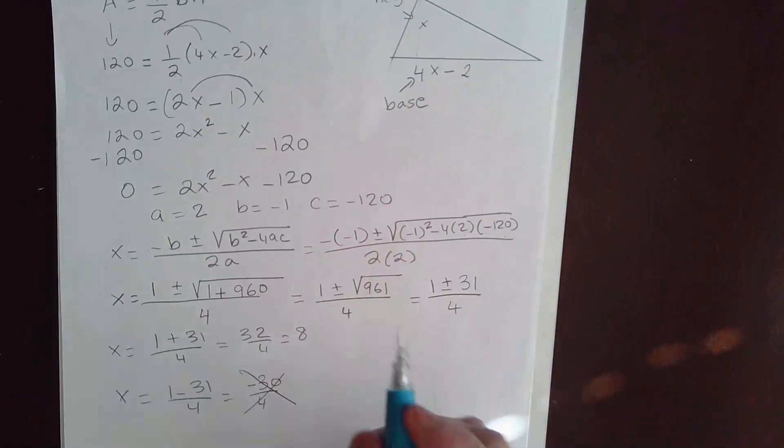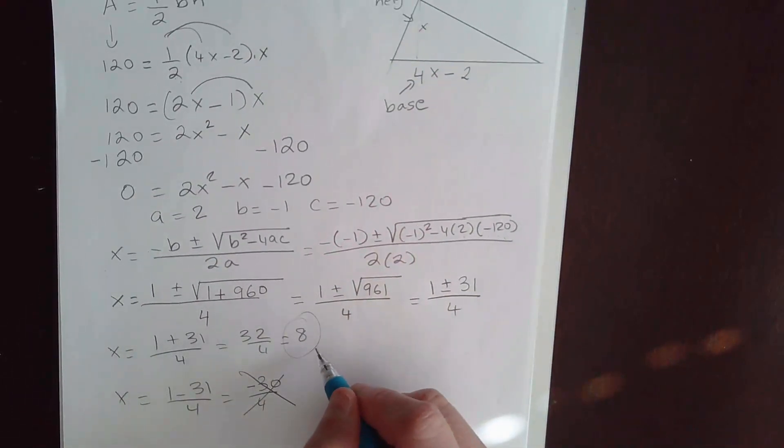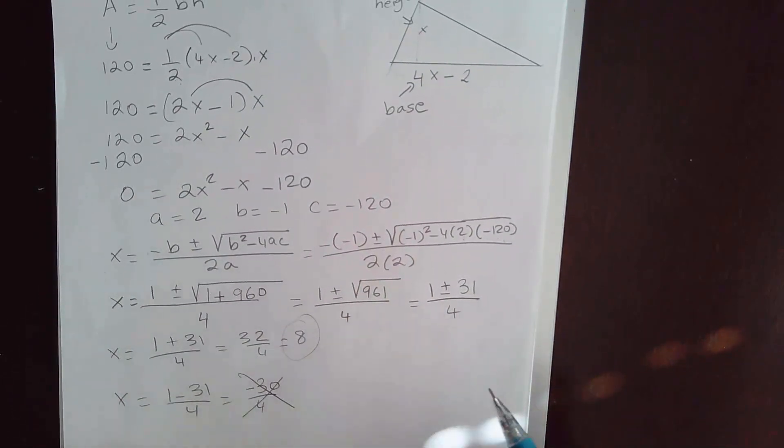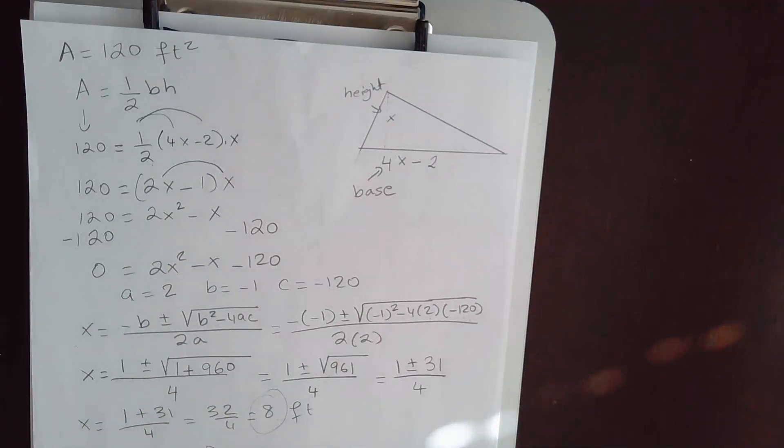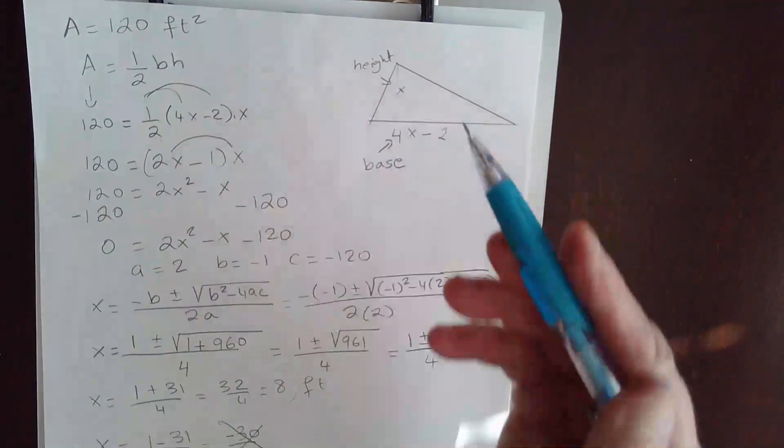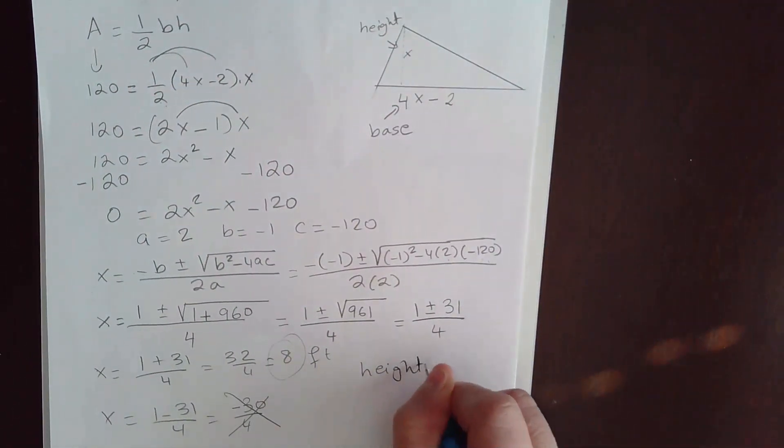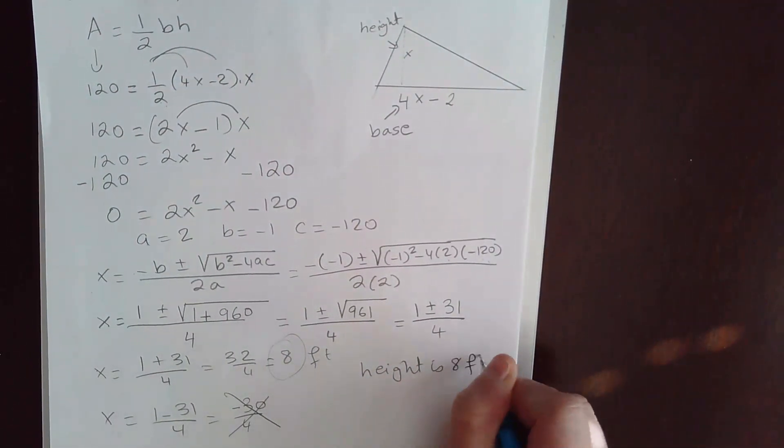Okay? So the only possible case is 8. The unit is in feet. So I have 8 feet. What does that mean? Now, if you recall, X is the height. So the height is 8 feet.